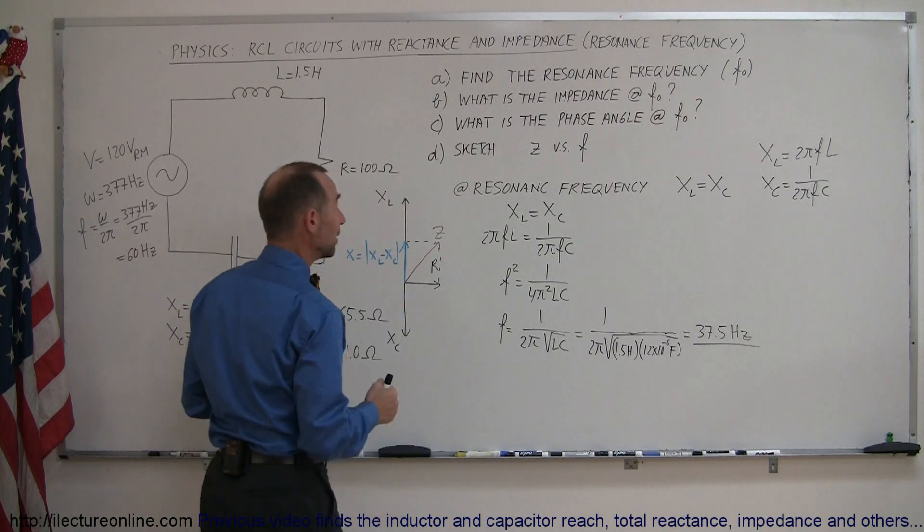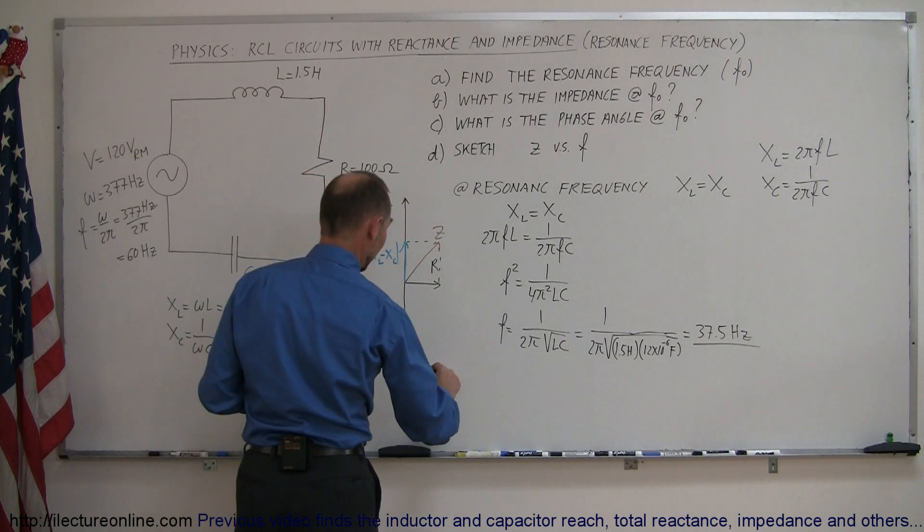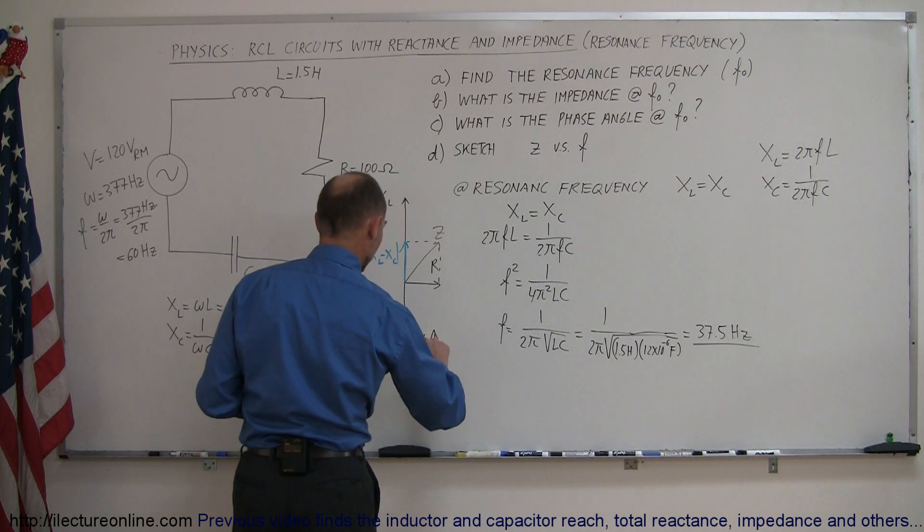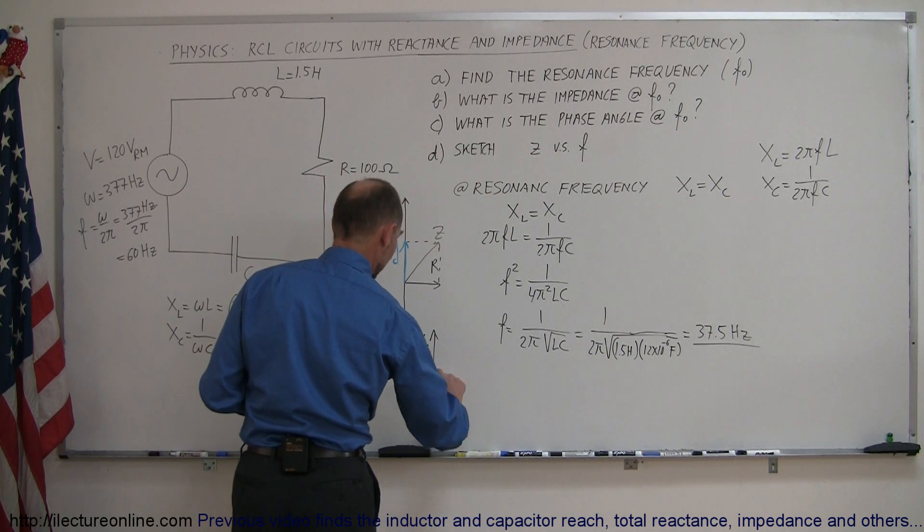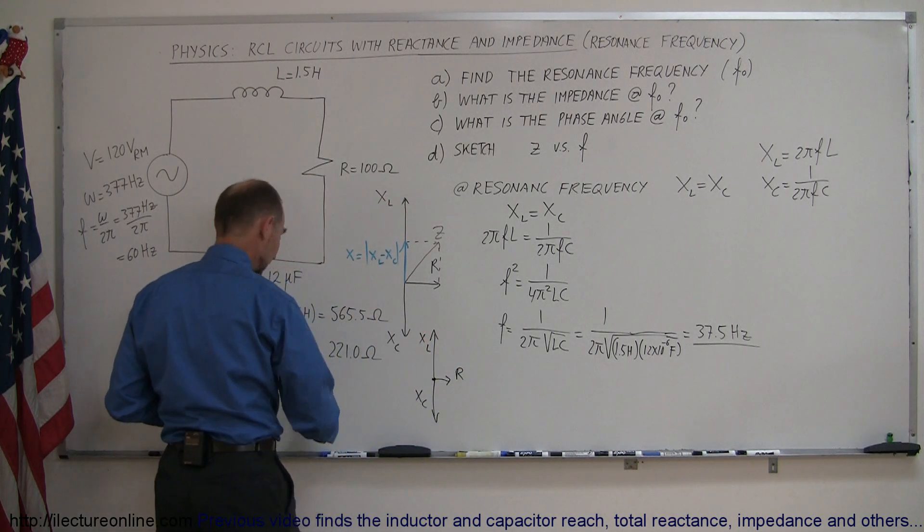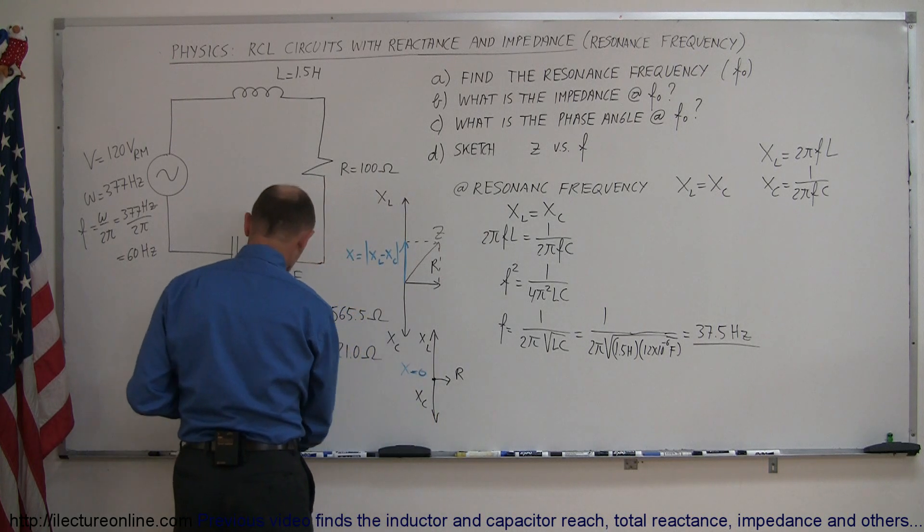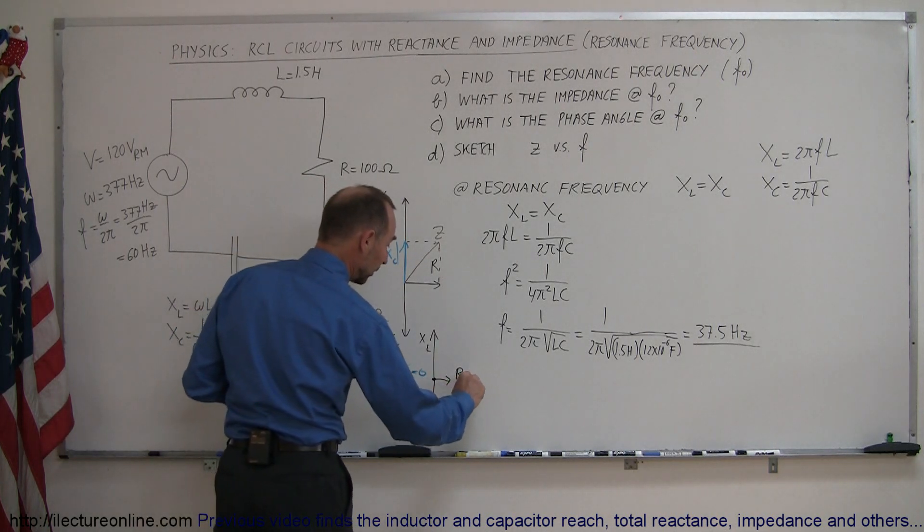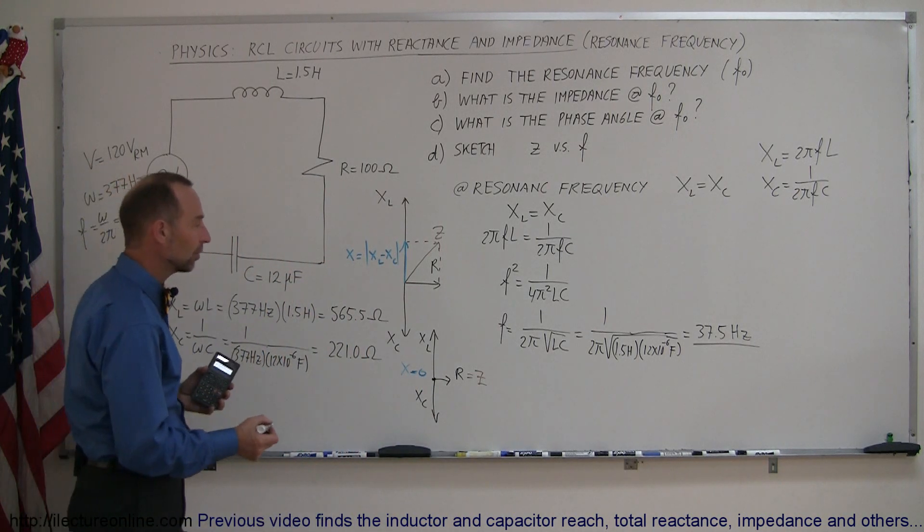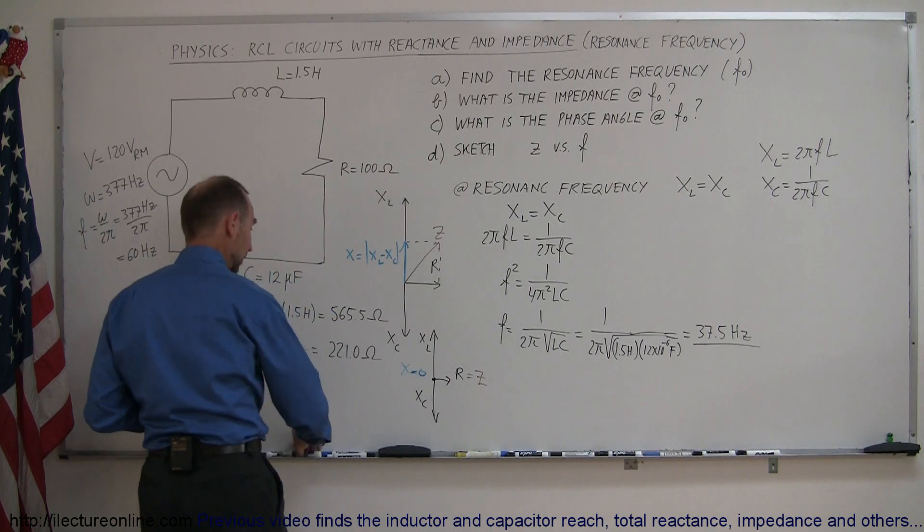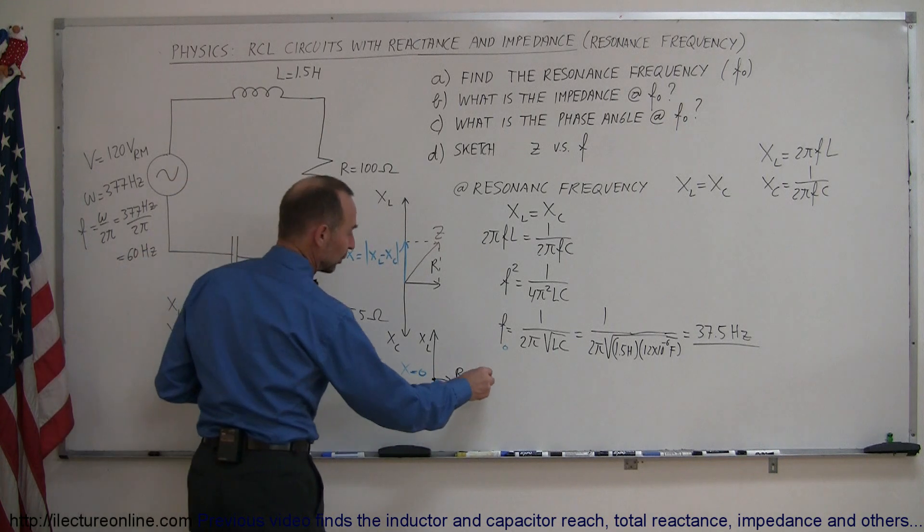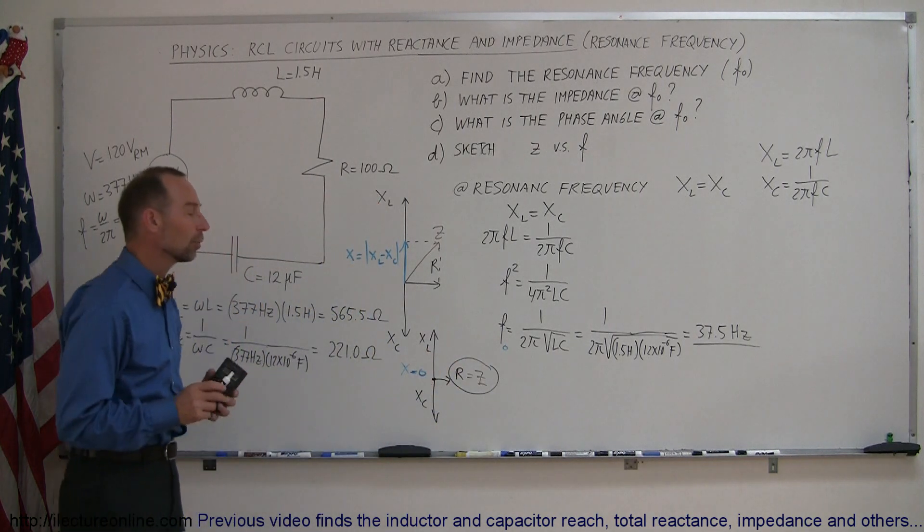Let's find out what is the impedance at F sub naught. What happens then is that we'll have the same value for X sub L and X sub C. This will be X sub L, this will be X sub C, this will be my R, and if they're equal to each other and add them together, then I end up with X equaling 0, and that means that R will then be equal to the impedance. So at the resonance frequency, the impedance is simply equal to the resistance.